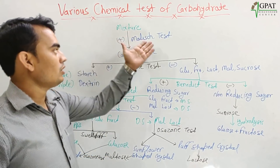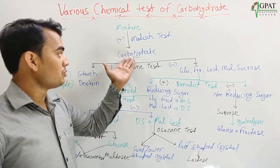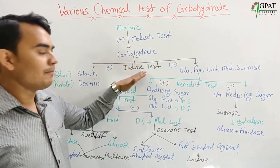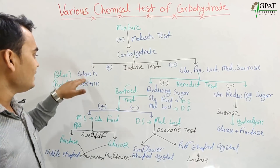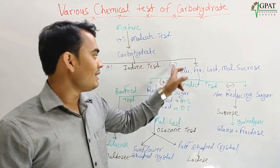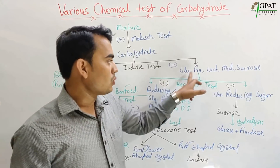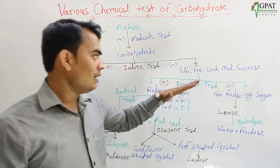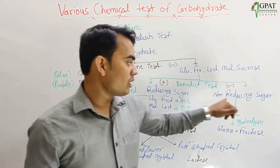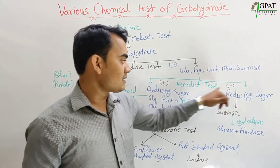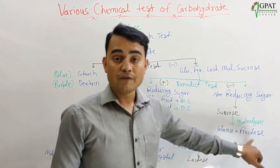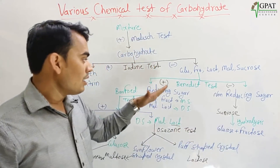Quick revision: We took the mixture and applied the Molisch test. If positive, it is a carbohydrate. Then we apply the iodine test — starch shows blue color, dextrin shows purple color. If iodine test is negative, it could be glucose, fructose, lactose, maltose, or sucrose. We then apply the Benedict test to differentiate reducing sugars from non-reducing sugars. If Benedict test is negative, it is the non-reducing sugar sucrose.